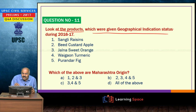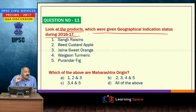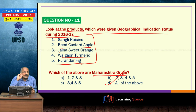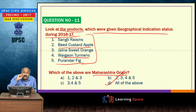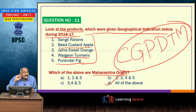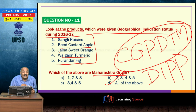Look at the products given geographical indication status. Banginapalli mango was also recently given GI status and is specific to Andhra Pradesh. Five products listed — Songli raisins, bead custard apple, Jalna sweet orange, Vigong turmeric, and Purandhar fig — all belong to Maharashtra origin. The geographical indications registry is in Chennai under the Ministry of Commerce and Industry, specifically under the Controller General of Patents, Designs and Trademarks under DIPP. As per the National Intellectual Rights Policy, DIPP is the nodal authority.